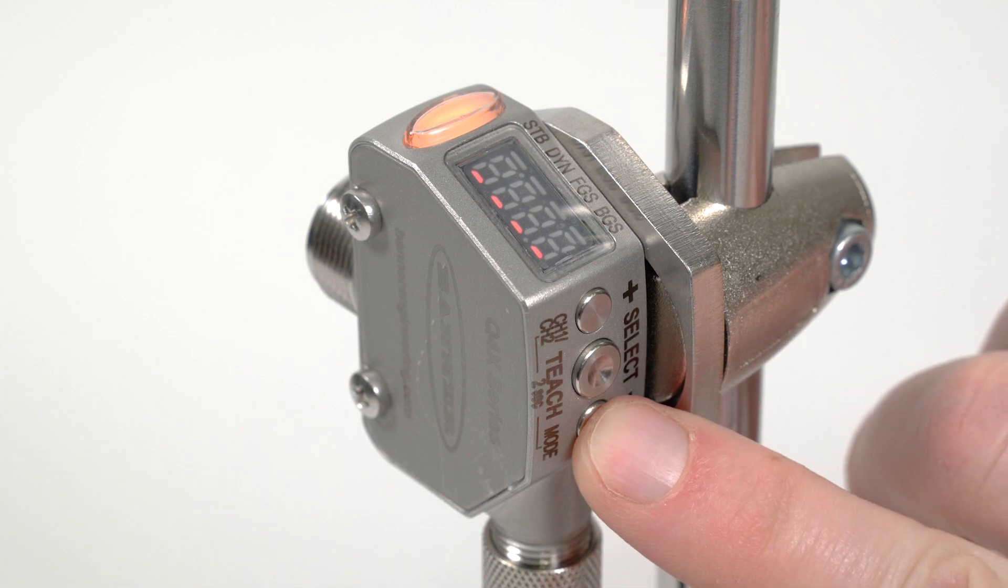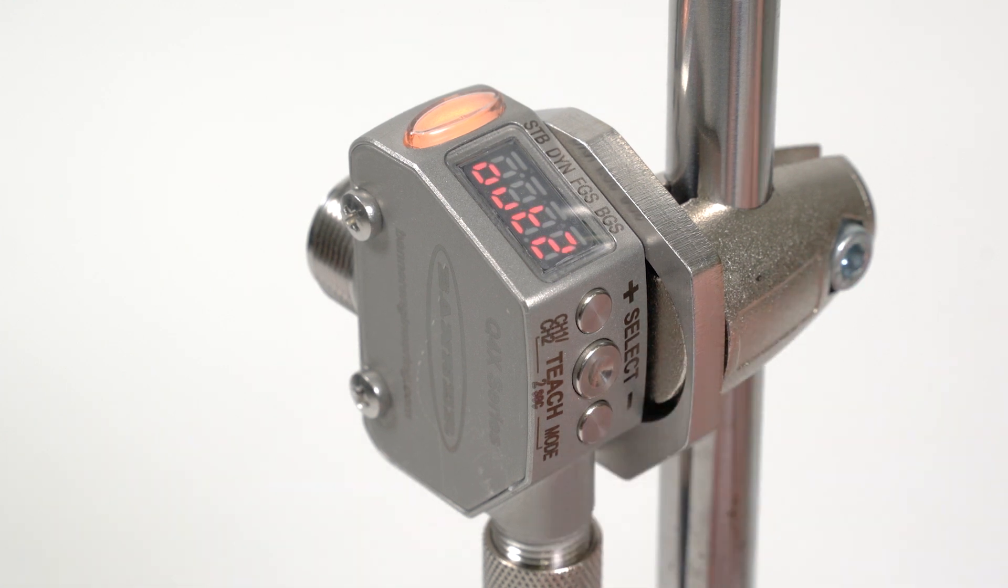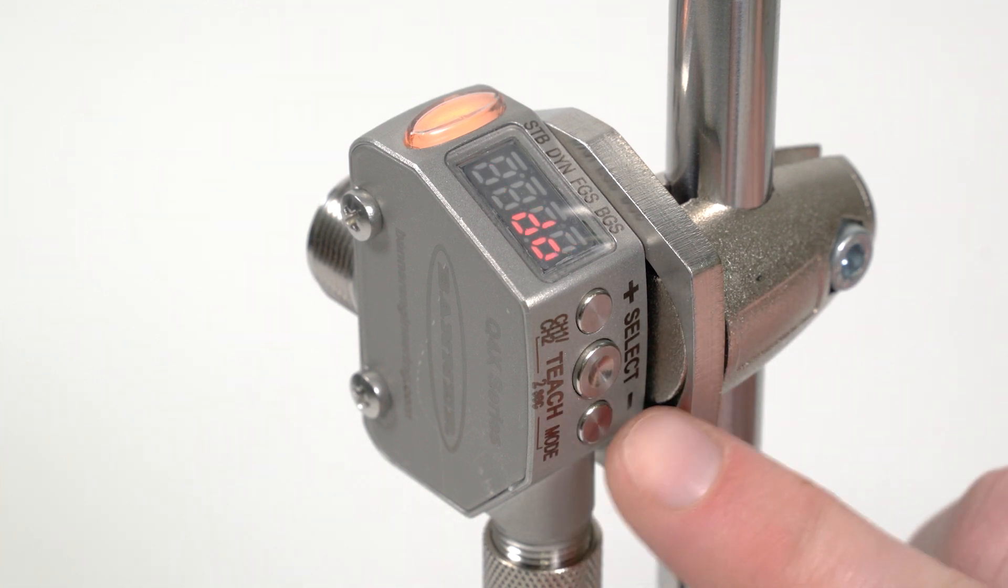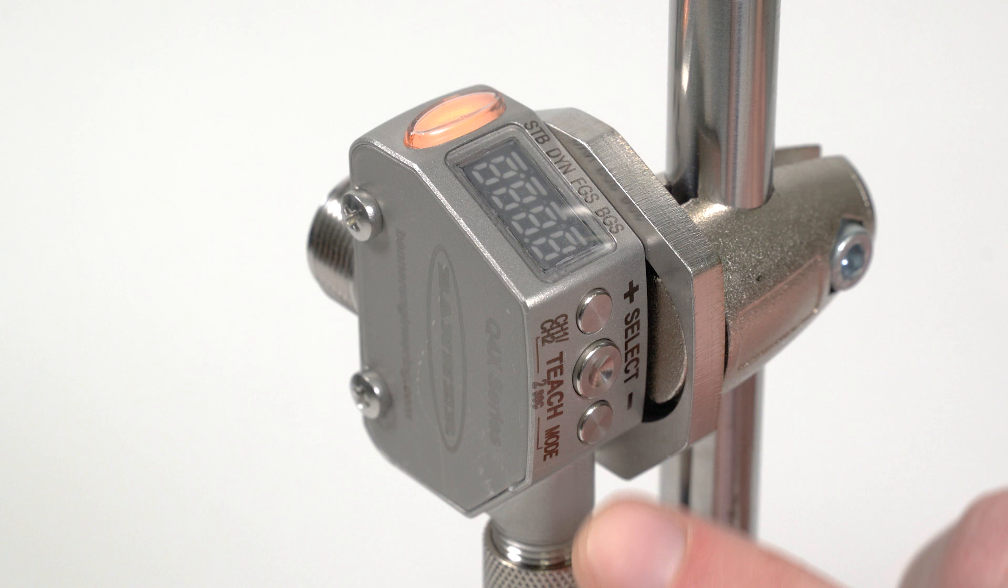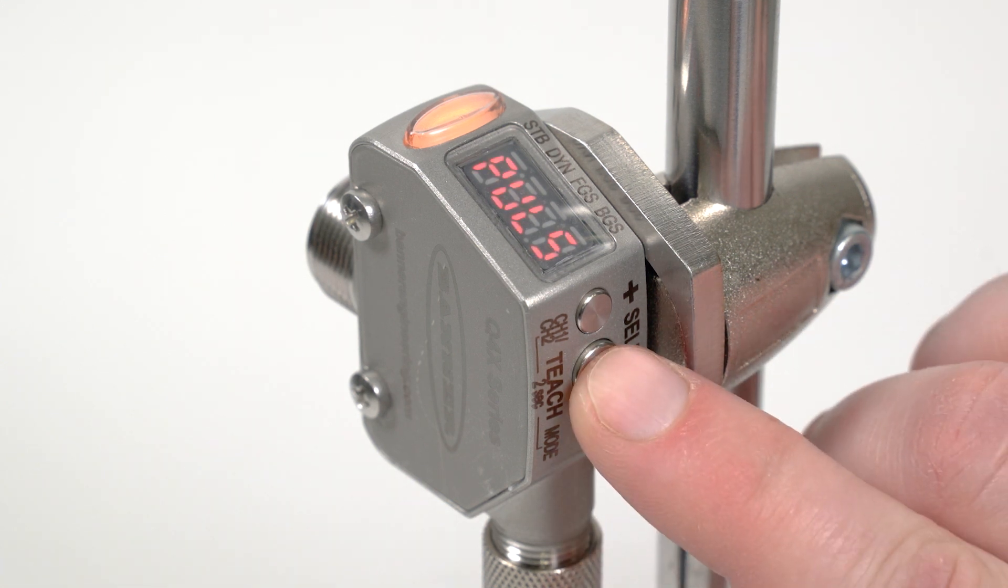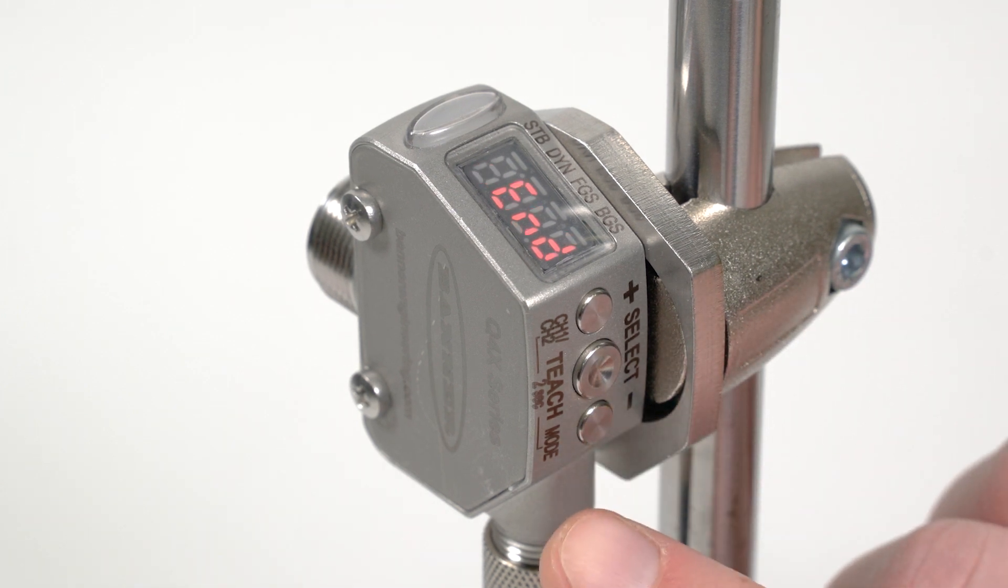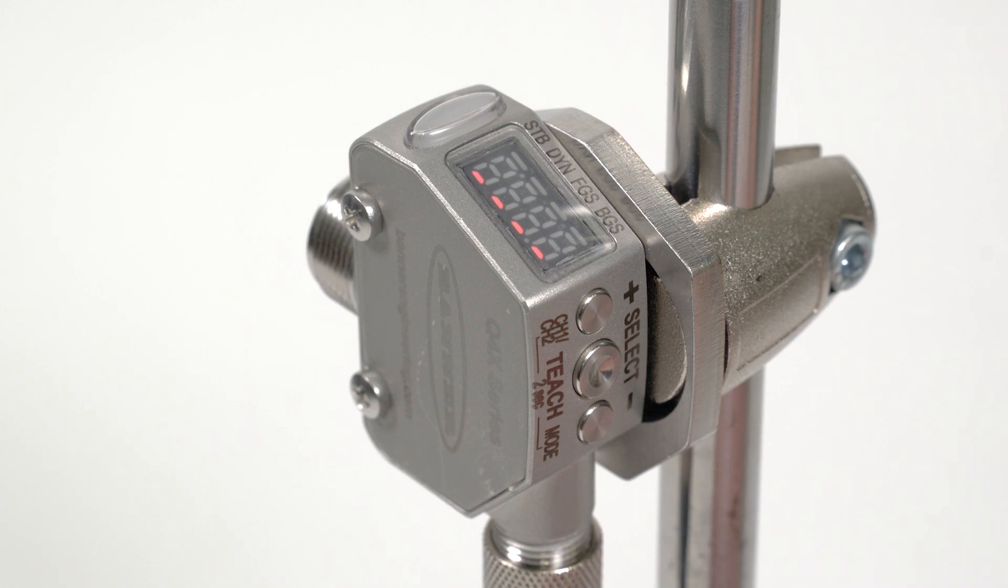Next, press and hold the minus or mode button for two seconds. The display should say out 2. Press the select button and then use the plus or minus buttons to scroll through the output options until you see pulse. Press the select button again. The display will flash and return to the menu. Scroll through the menu until you see end and press the select button one last time.